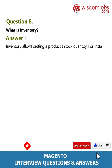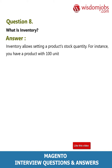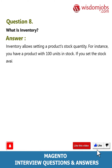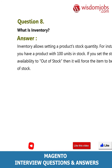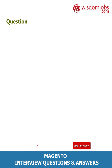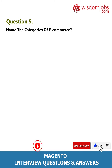Question 8: What is inventory? Answer: Inventory allows setting a product stock quantity. For instance, if you have a product with 100 units in stock and you set the stock availability to out of stock, then it will force the item to be out of stock.